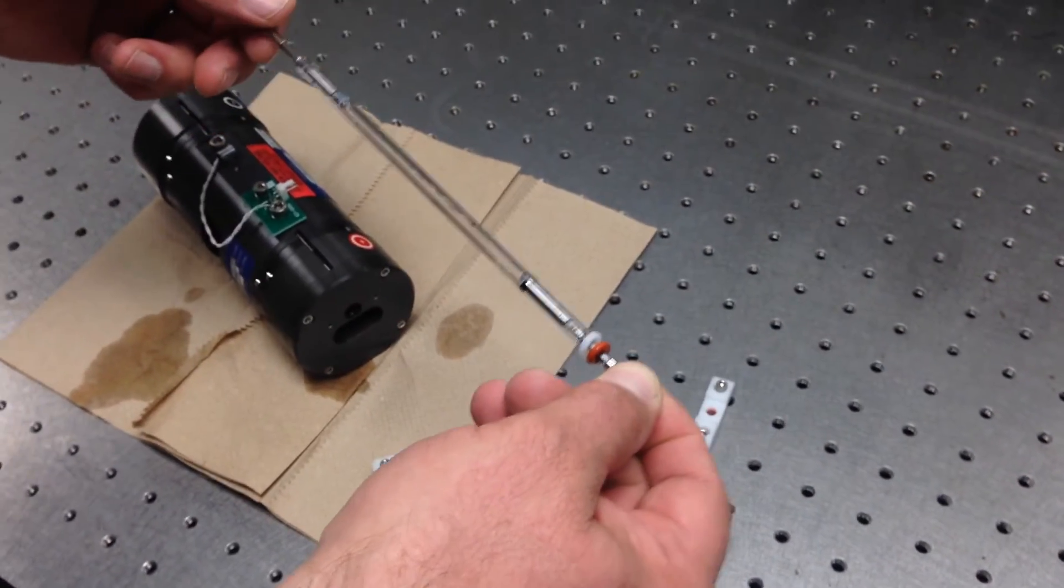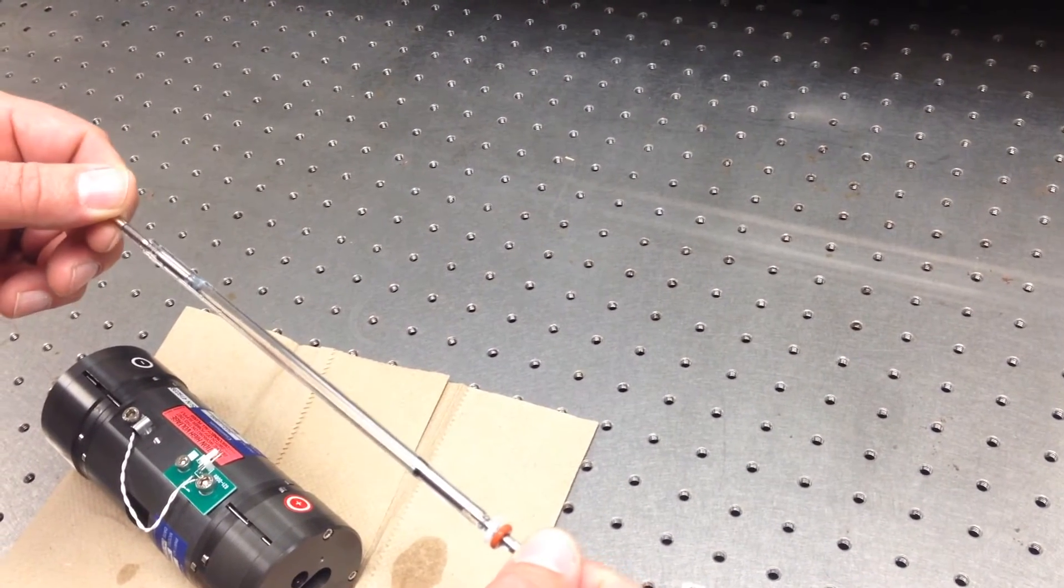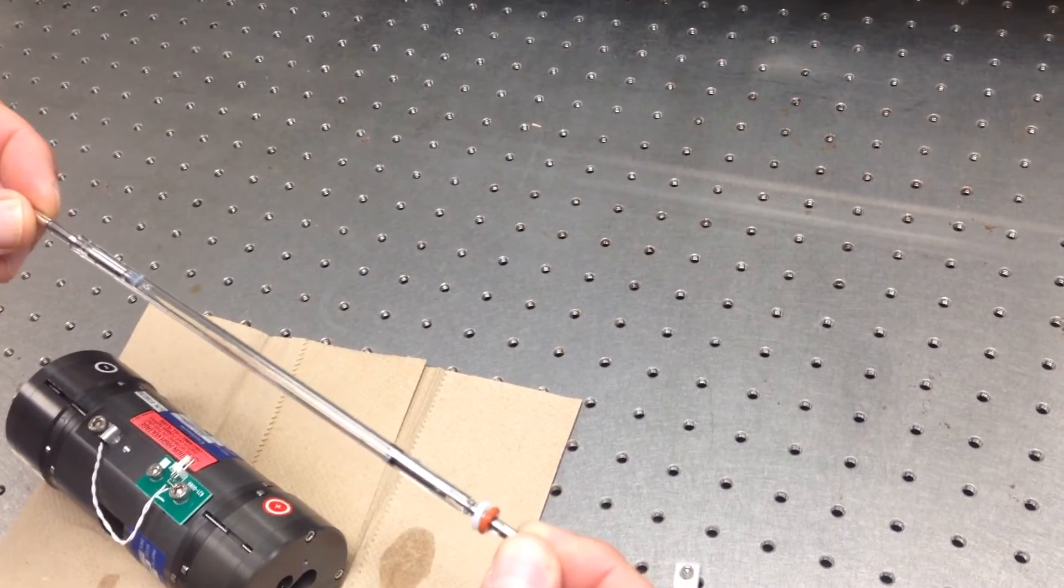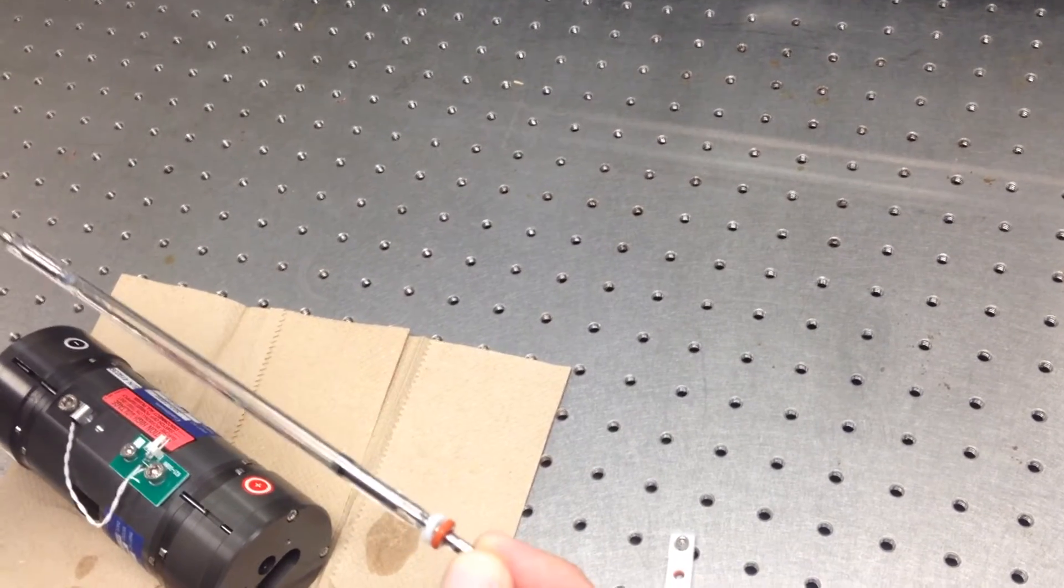And this is your lamp here. You want to make sure that you are not touching the glass with your fingers because the oils from your fingers will decrease the lifetime of the lamp. If you do touch it with your finger, just wipe it off with methanol. You will be fine.